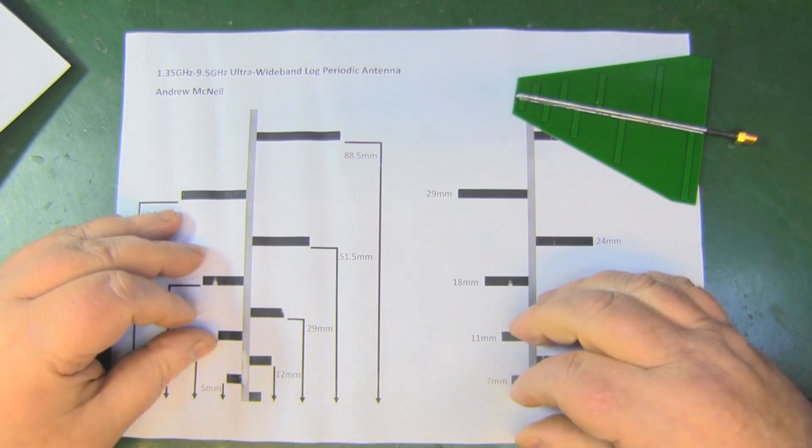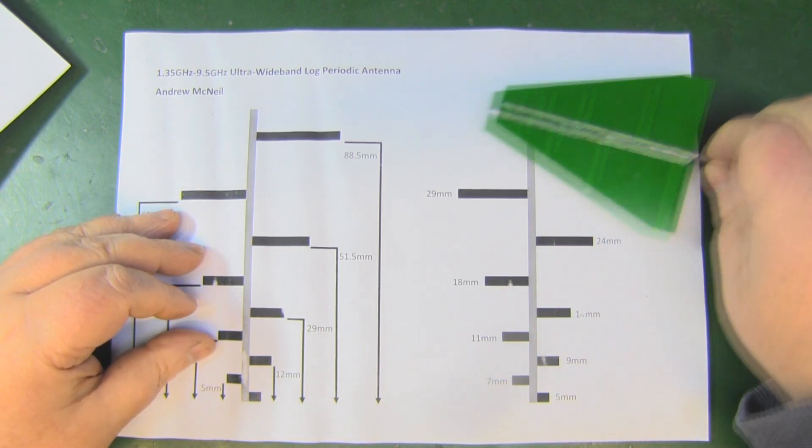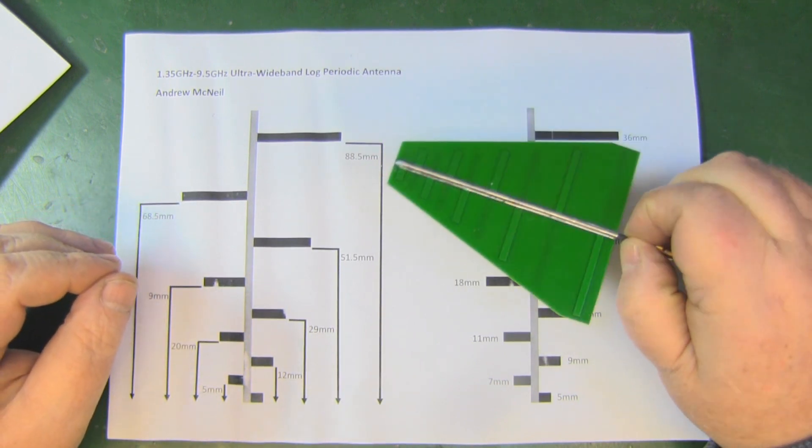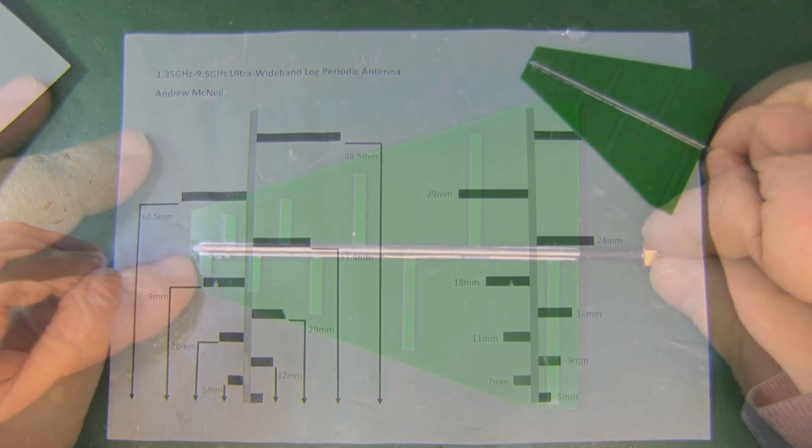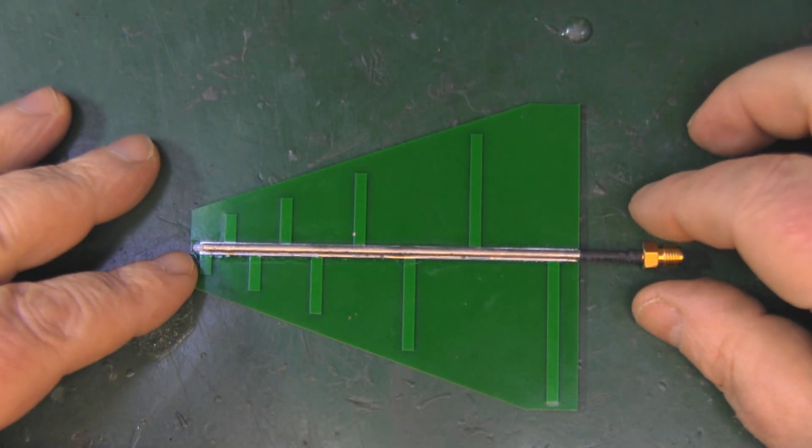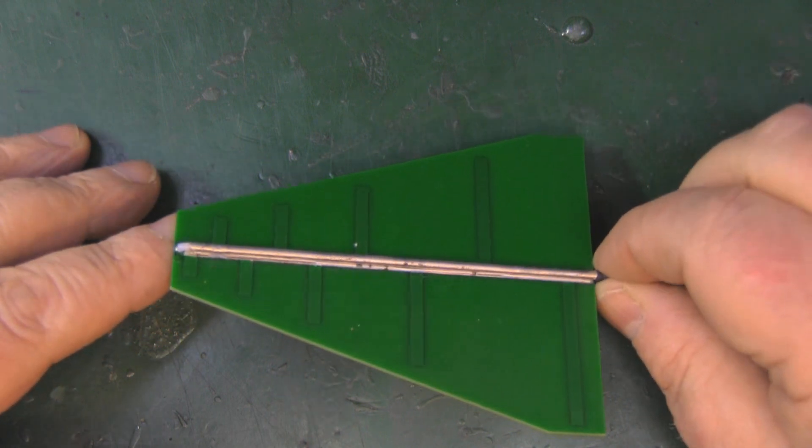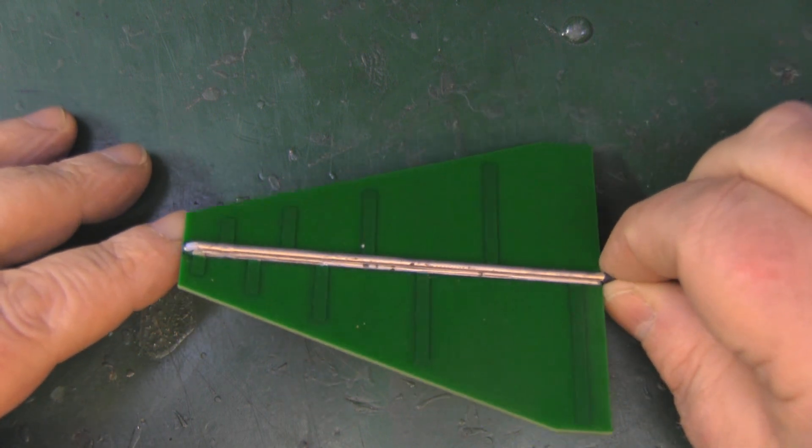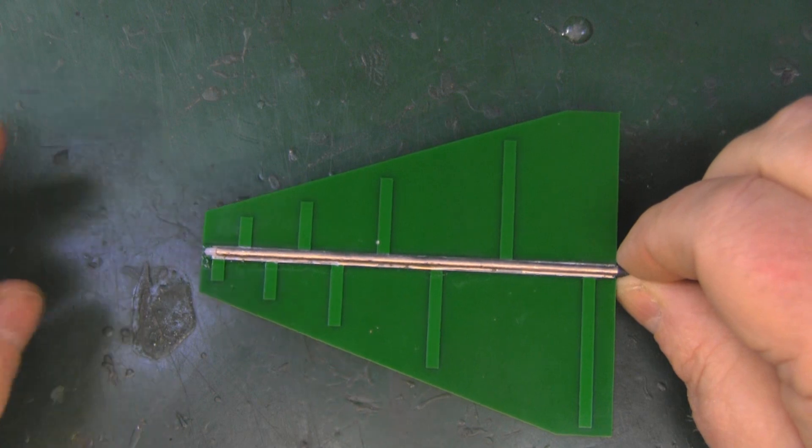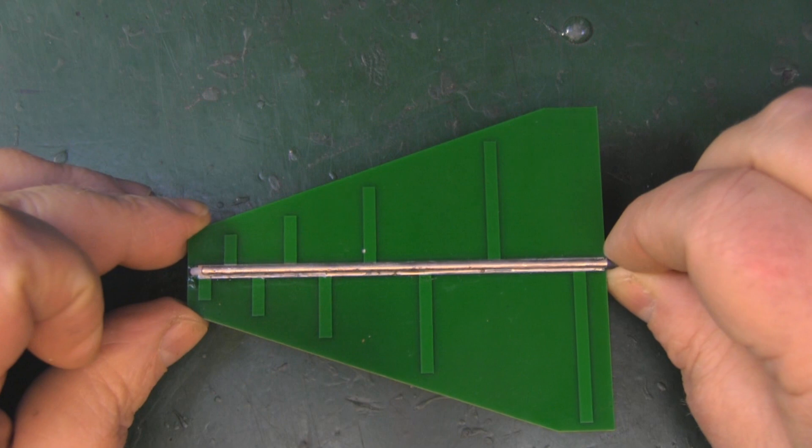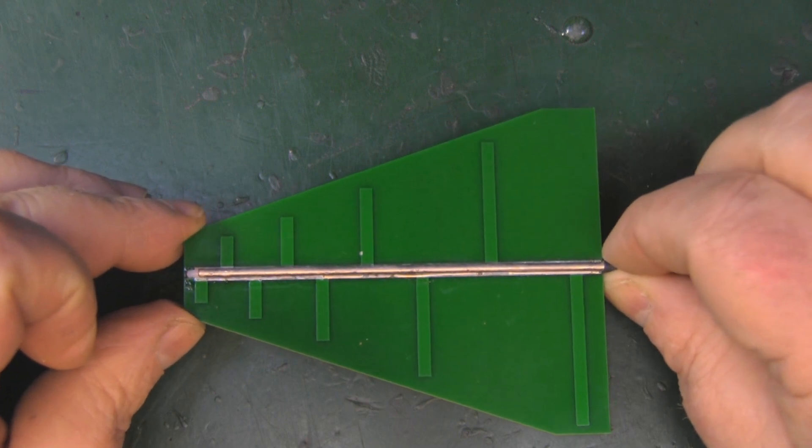When you see these for sale it doesn't necessarily mean that they work at every frequency between one gigahertz up to nine gigahertz. So this was just a quick little video explaining the wideband antennas that you find on eBay and Banggood and to note it might not work well at the frequency that you're interested in just because they're wideband.